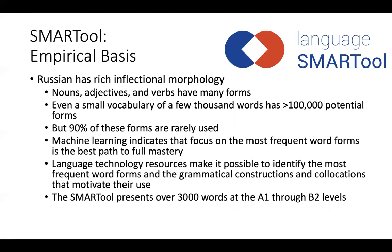The SMART tool is a research-based tool. It's based on the idea that Russian has a rich inflectional morphology, which means that words have many forms and that even a very simple vocabulary has over a hundred thousand potential word forms. But most of these forms are rarely, if ever, used. We've undertaken a machine learning experiment indicating that focus on the most frequent word forms is the best path to full mastery of the system. Current language technology resources make it possible to identify the most frequent word forms and the grammatical constructions and collocations they are associated with.